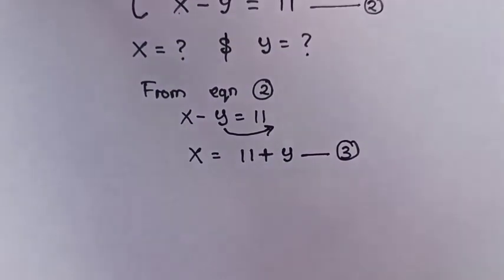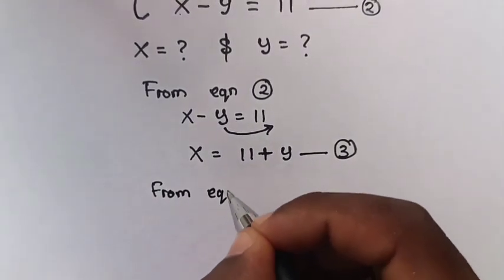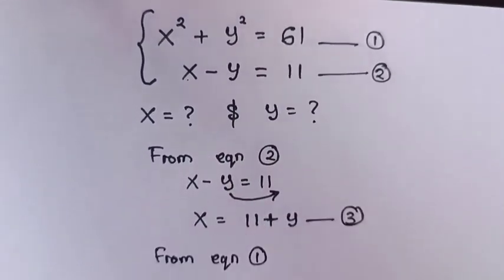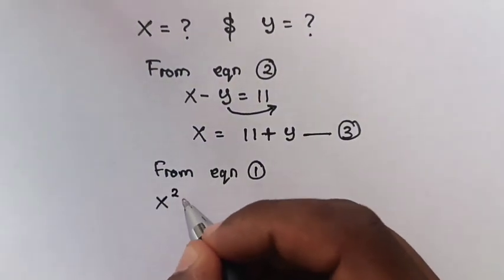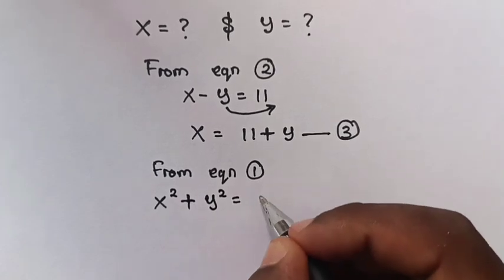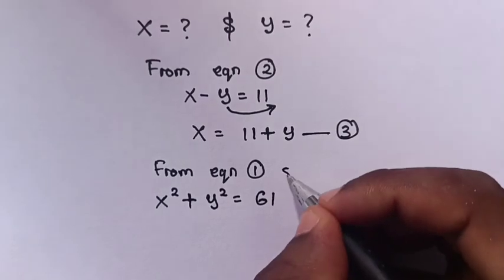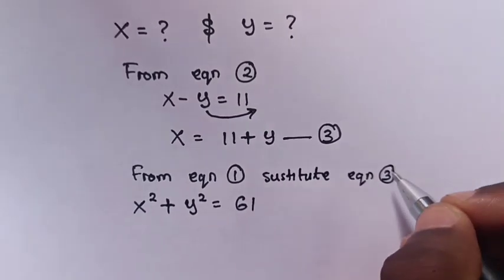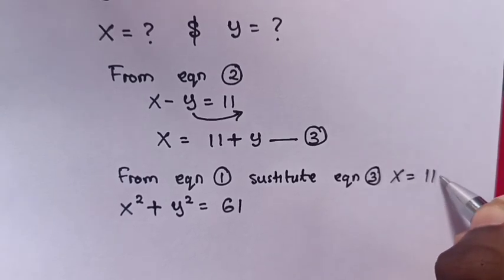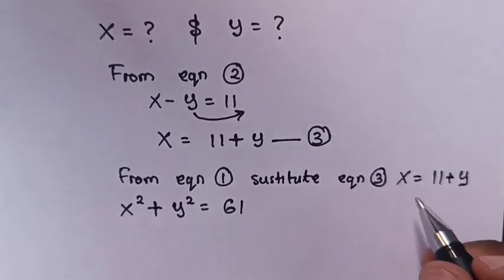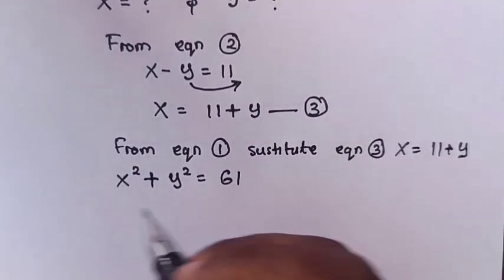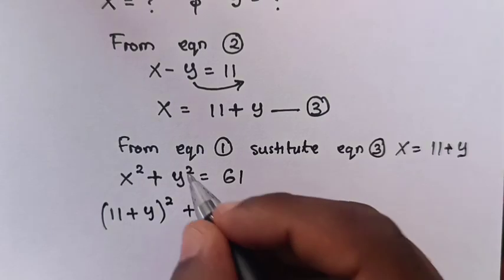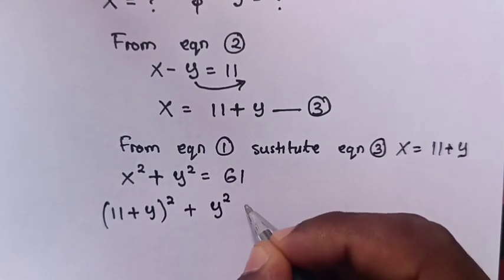Now, from equation 1, which is x squared plus y squared is equal to 61, we substitute equation 3, which is x is equal to 11 plus y. So we substitute the value of x, which is 11 plus y, giving us (11 plus y) squared plus y squared is equal to 61.